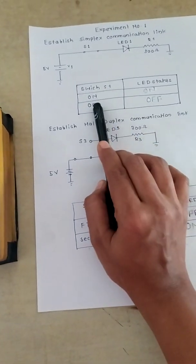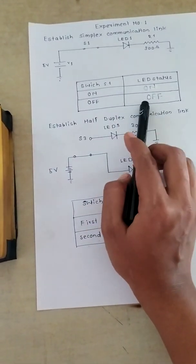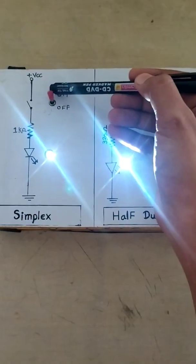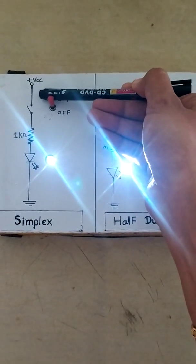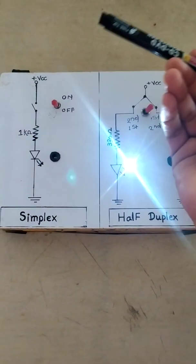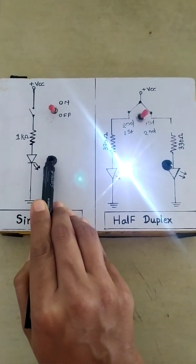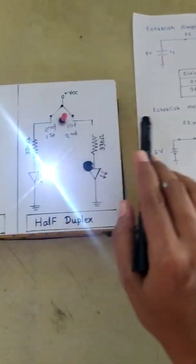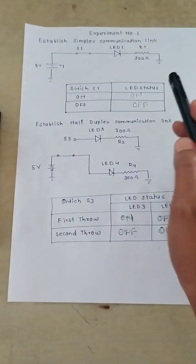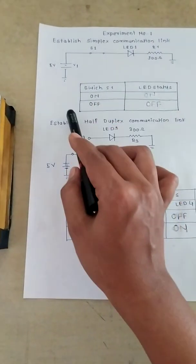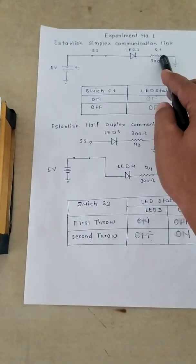Next, we turn off the switch and then see the status of the LED. We turn off the switch and the status of the LED is off. So we write here off. This is the first part of the experiment.